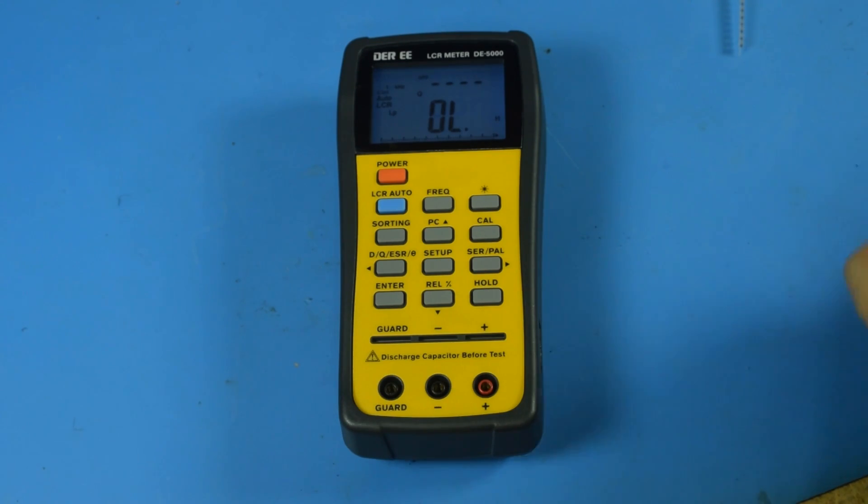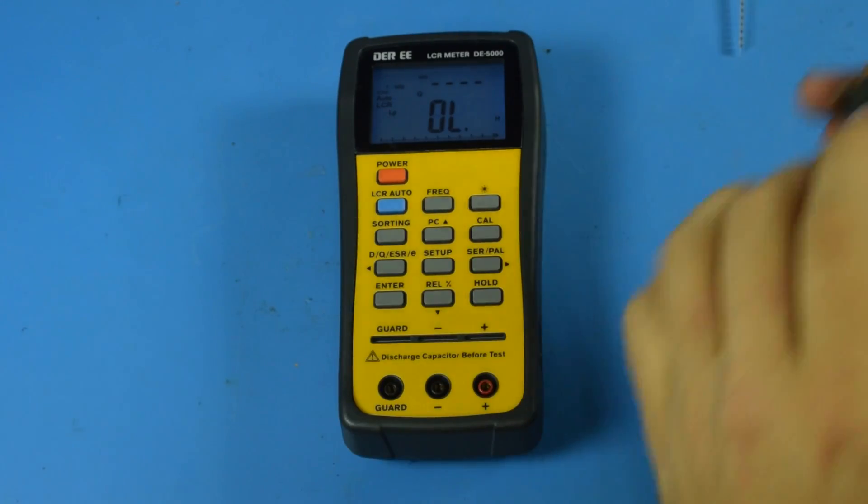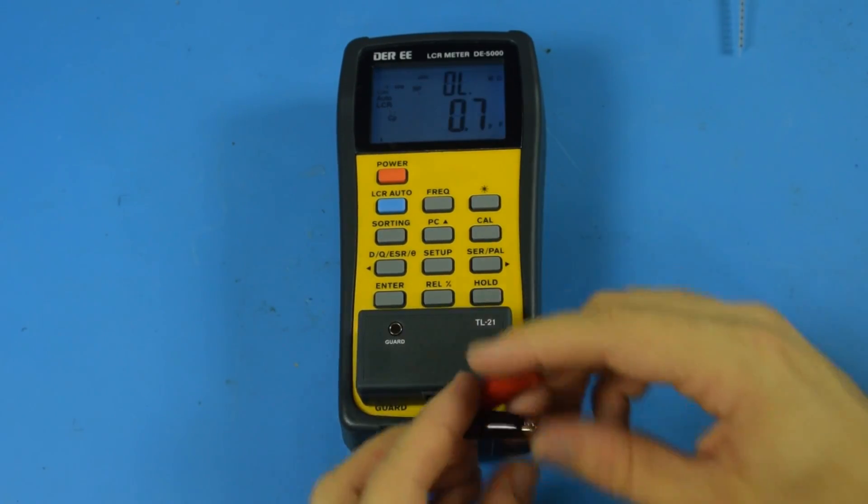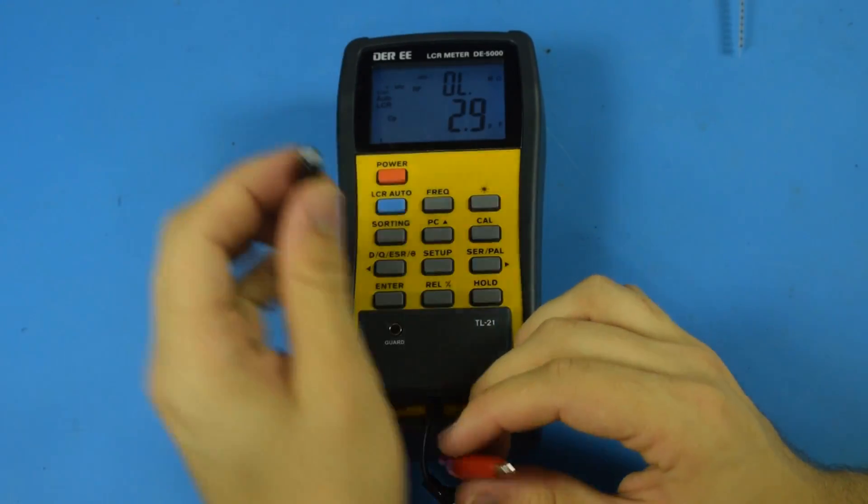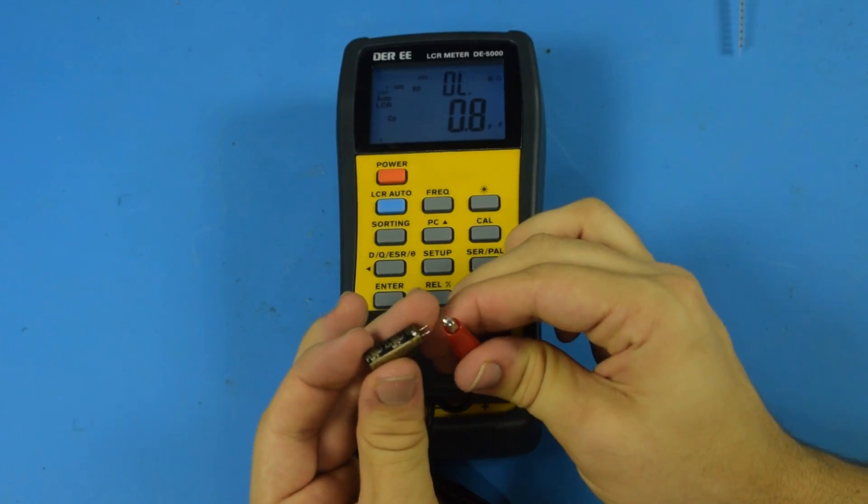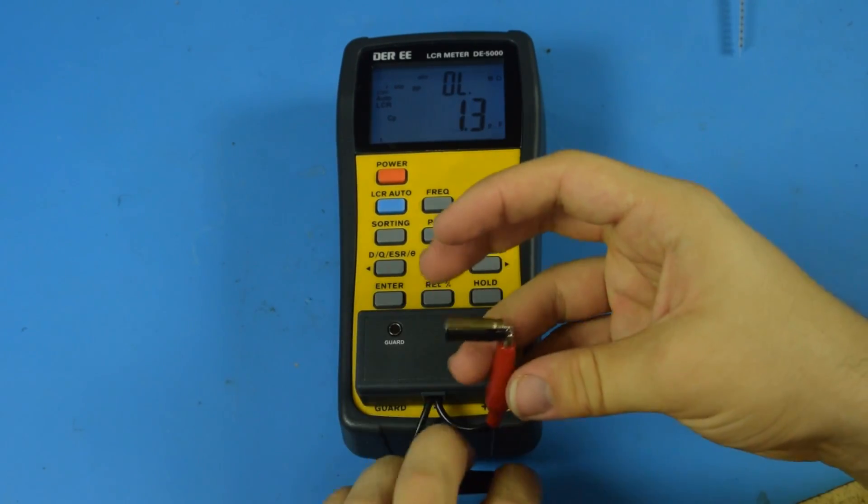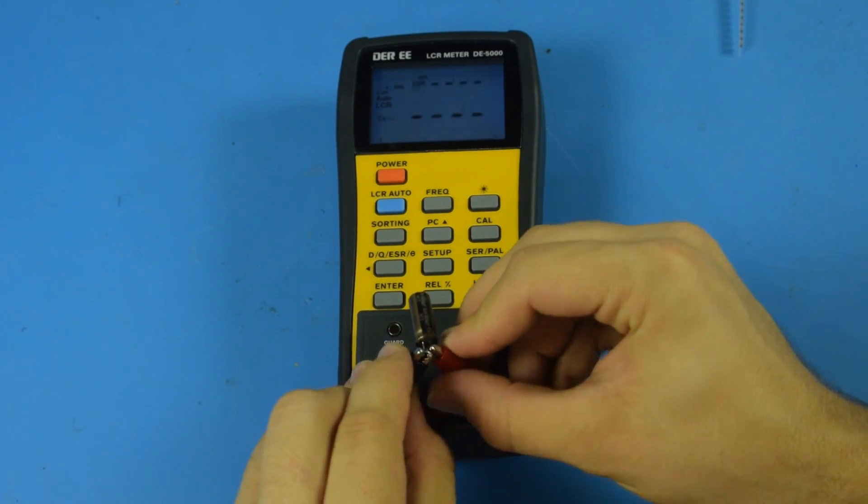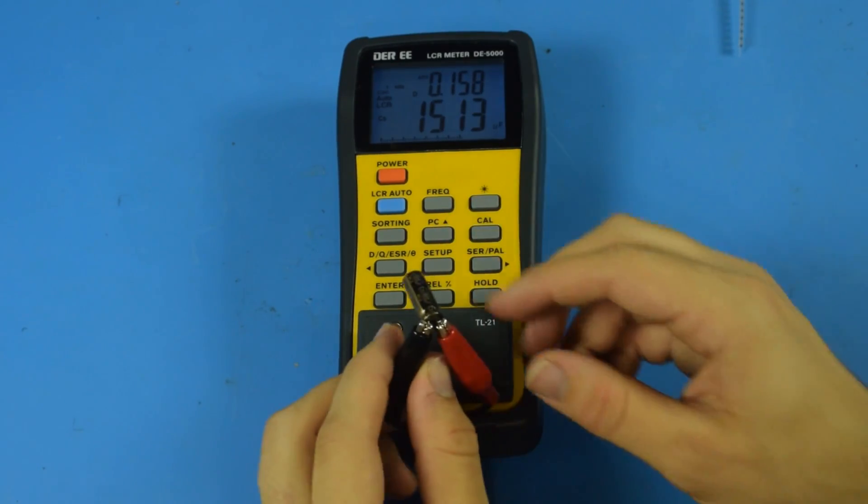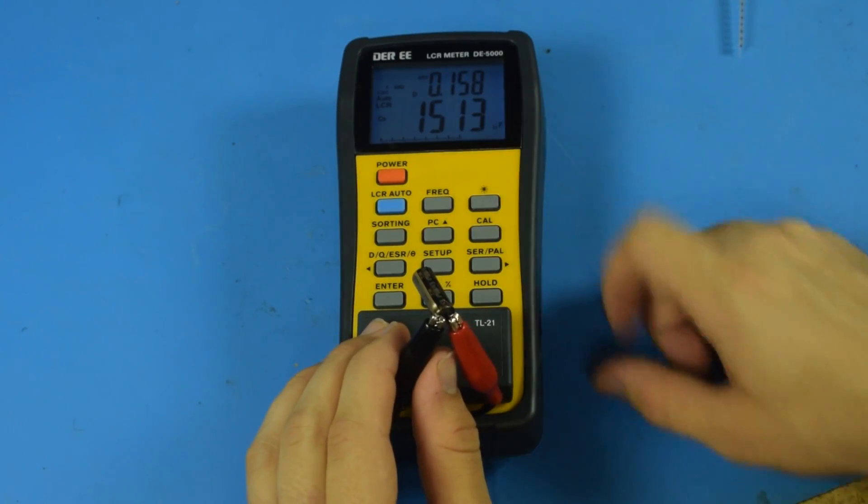So let's grab this thing. Plug her in. There we go. And now we can clip in some capacitors. Let's go ahead and take this one. So this is an 1800 microfarad. Positive and the negative. Ooh, we're not a lot of room there. There we go. And we can see we're reading 1500. Okay.